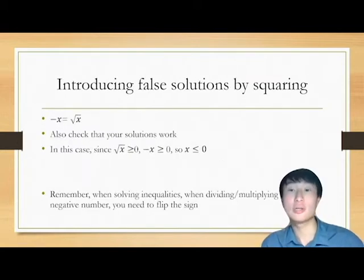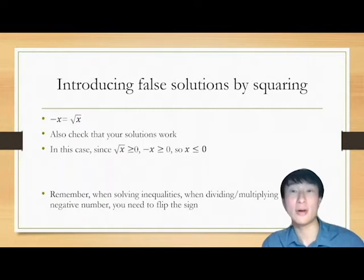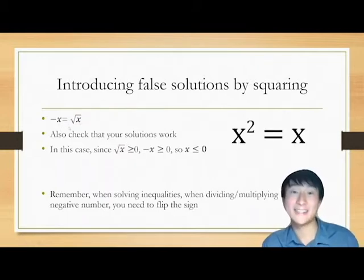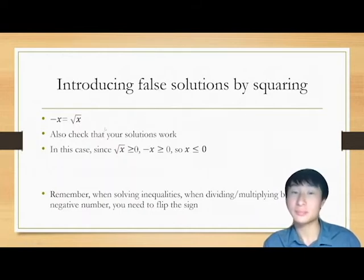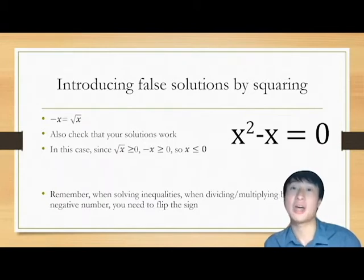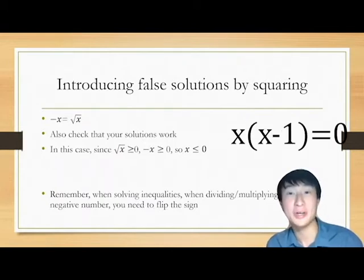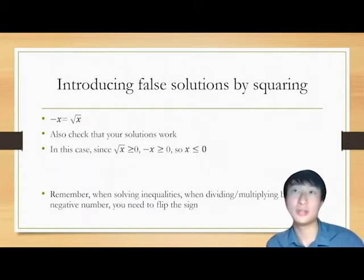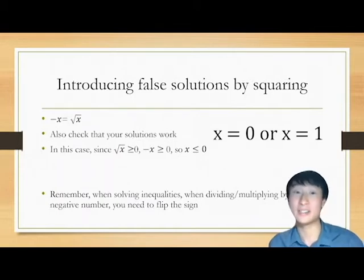Secondly, introducing false solutions by squaring is a very big thing that happens. If you have negative x equals root x and you square both sides, you'd obviously get x squared equals x, right? So if you get x squared equals x, then when you rearrange that, you get x squared minus x. And then you get x times x minus 1 equals 0, and then you get x equals 0 or x equals positive 1.